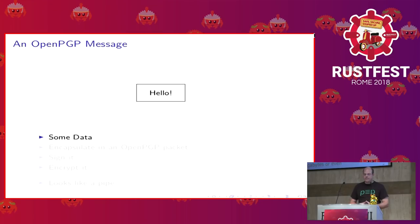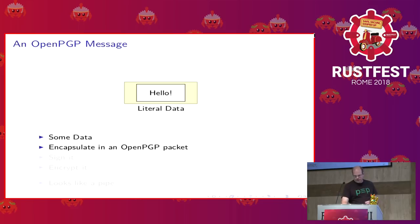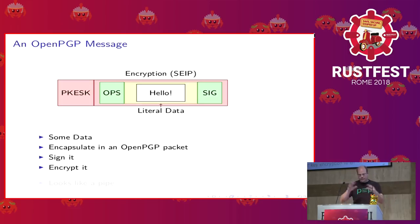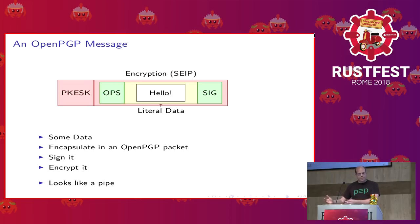Let's look at an OpenPGP message in detail. Say we want to say hello to someone — we take our data and encapsulate it in a literal data packet. Then we want to sign it, so we stick a one-pass signature at the front and the signature at the end. Then we encrypt it, putting the whole thing in a SEIP container, with a PKESK at the front containing the encrypted session key. If you think about what I just described, it functions a little bit like a pipe: you pipe your data through a literal data container, then into a signature generation step, then into an encryption step.